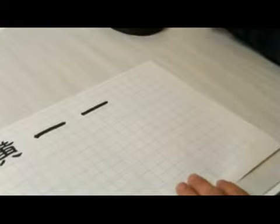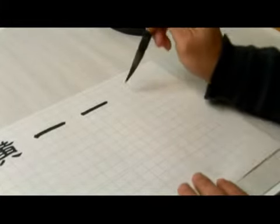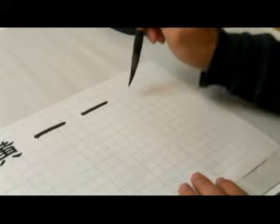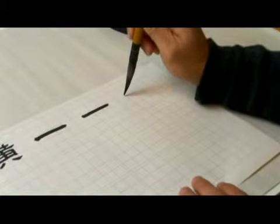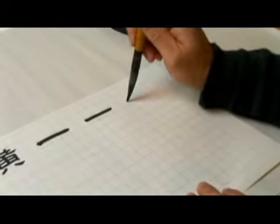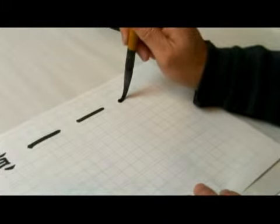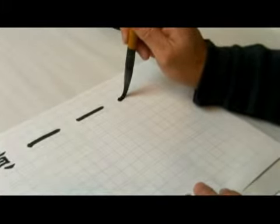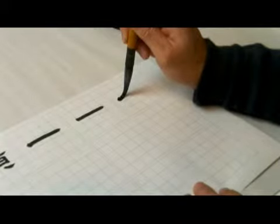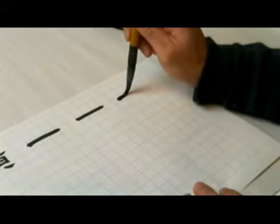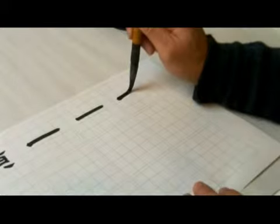The other type of 恒: you also start by going in the opposite direction, to the left, then come back. Push your brush down a little, then lift little by little as you move to the right.